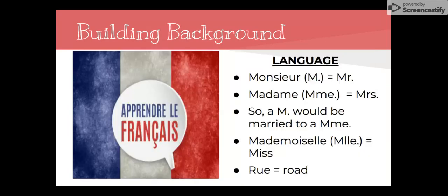You will see a little bit of French in the story. M. with a period stands for monsieur, which means mister. MME stands for madame, which means missus — so a monsieur would be married to a madame. Mademoiselle, abbreviated M-L-L-E, is not really used much in modern society, but it meant miss, someone who was not married. And you will see that rue means road.